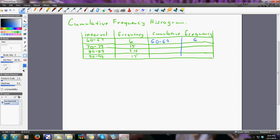Between 70 and 79, I had 15 scores, but what that really means is between 60 and 79, I had 21, because six plus 15 is 21.